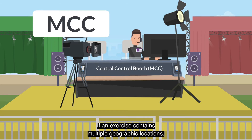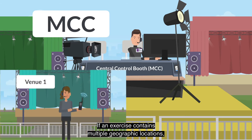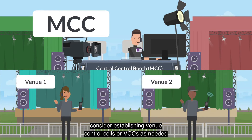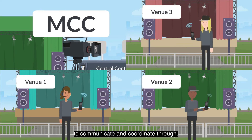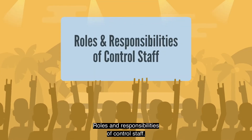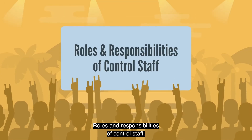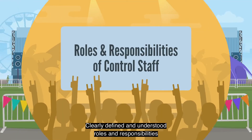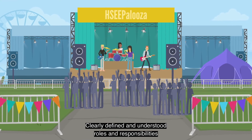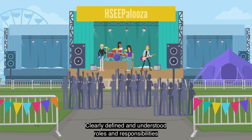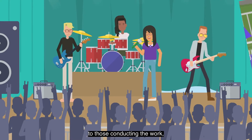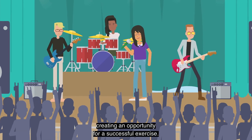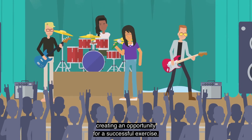If an exercise contains multiple geographic locations, consider establishing Venue Control Cells, or VCCs, as needed to communicate and coordinate through. Clearly defined and understood roles and responsibilities provide clear structure and expectations to those conducting the work, creating an opportunity for a successful exercise.